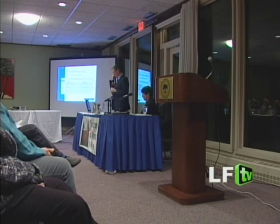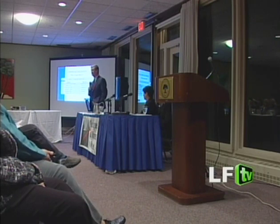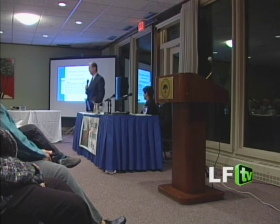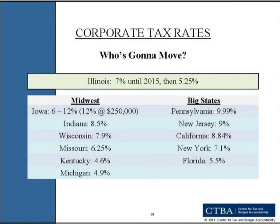We increased our corporate tax rates and then a number of governors — of Wisconsin, Indiana, and New Jersey — came to Illinois and said: now that you've increased your corporate income tax rate, your businesses are going to run to our states. Really? Our new rate is 7% for businesses, and it drops down by 2015 to 5.2. The current rate in Indiana is 8.5% — more than our new rate, and has been for decades. Current rate in Wisconsin — more than our new rate. Current rate in New Jersey — a lot more than our new rate. The media let them get away with this silliness.